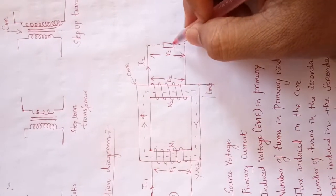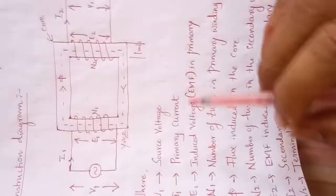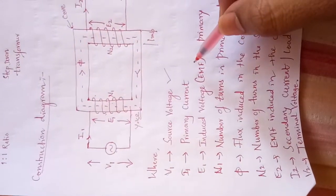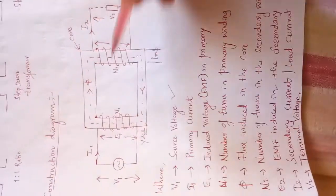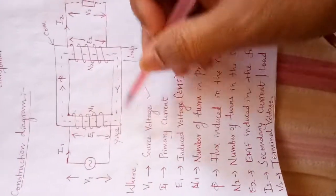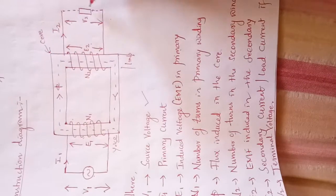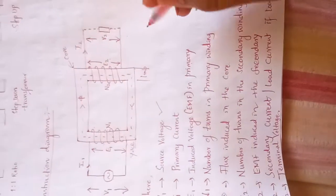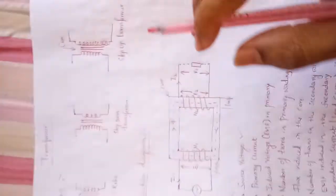The winding connected to the source is called the primary winding, and the winding connected to the load is called the secondary winding. The notations used are: V1 represents the source voltage, I1 represents the primary current, E1 represents the EMF induced in the primary, N1 is the number of turns in the primary, N2 is the number of turns in the secondary, Φ stands for the flux in the core, E2 stands for the EMF induced in the secondary winding, I2 is the secondary current which flows only when the load is connected, and V2 represents the terminal voltage.